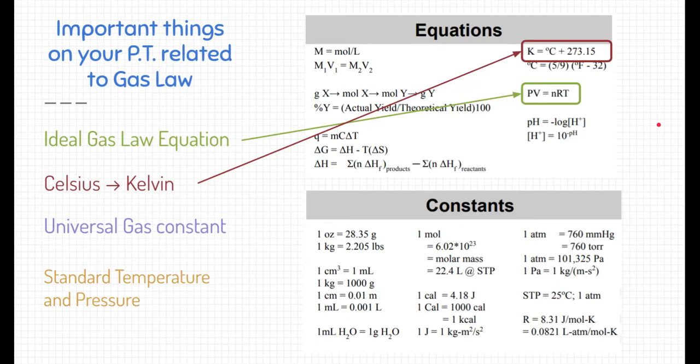If you look in the constants, we talked about one constant before, and that constant is R, also known as the ideal gas constant. That number's right here. You might notice that there's two there. We're going to use specifically this one because it's in liters, atmospheres, and moles Kelvin, and each of the units in that constant are the units we're using inside our ideal gas law.